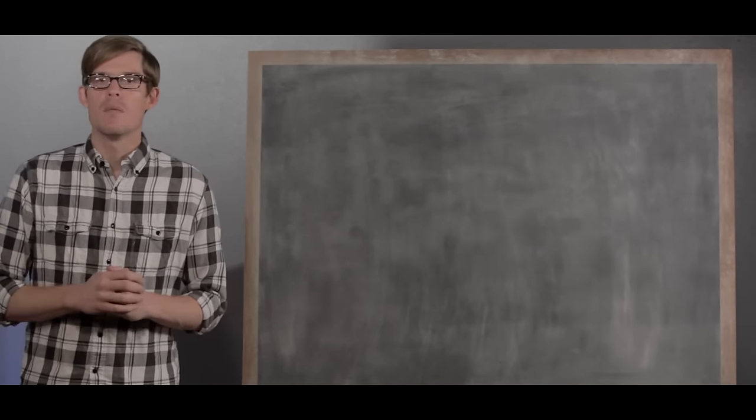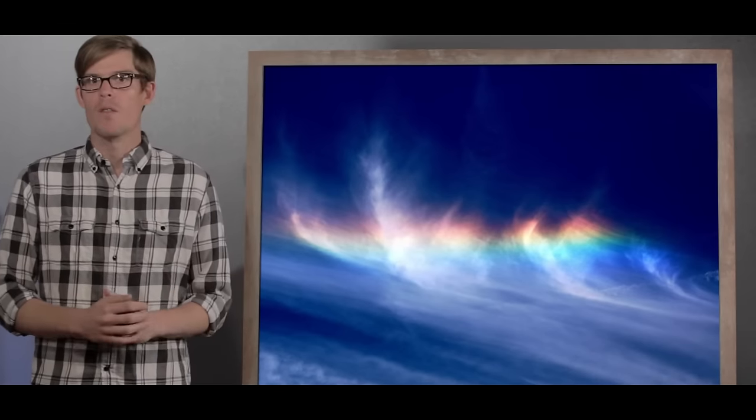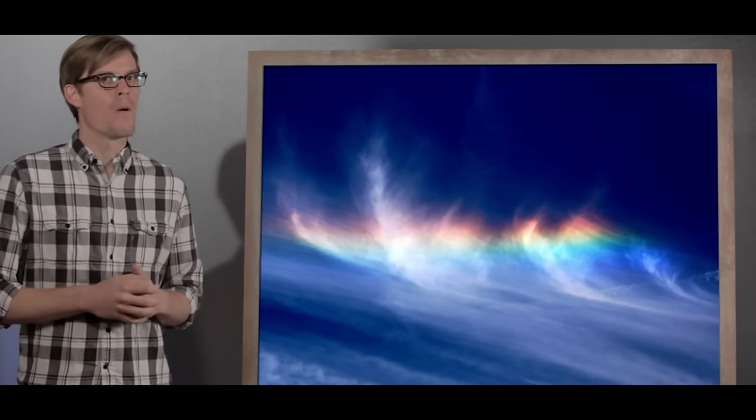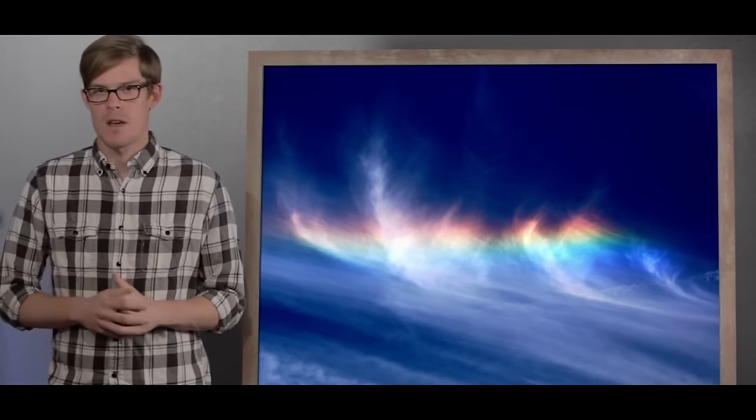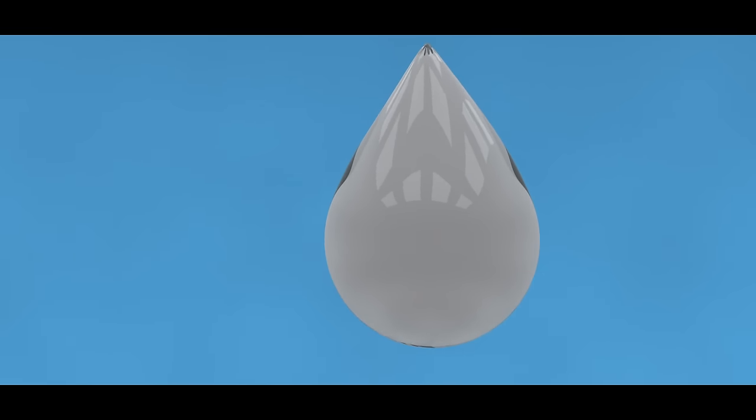Some of you might be saying, but Joe, I've seen a rainbow in a cloud before. Well, that's not really a rainbow. But we'll talk about that another time. Those suspended liquid prisms are surface tension on its smallest scale, and the droplets are pulled into the shape of a sphere. Each one can catch sunlight and become its own part of the rainbow factory.